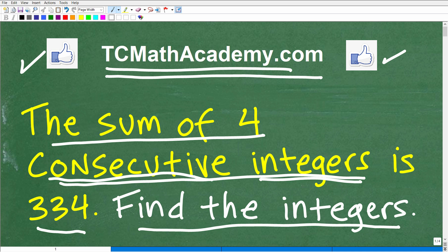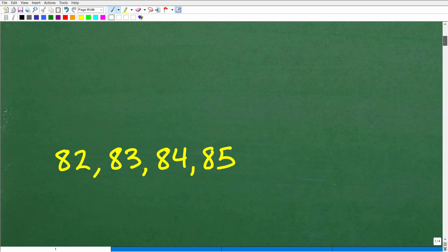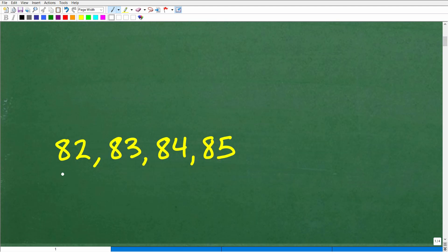The sum of four consecutive integers is 334. We want to find these four integers, and the answer is the following: 82, 83, 84, 85. These are our four consecutive integers.